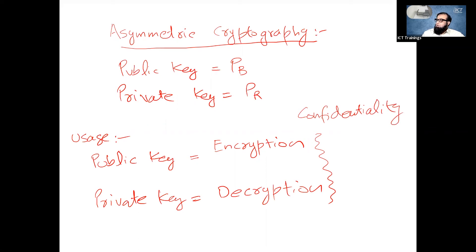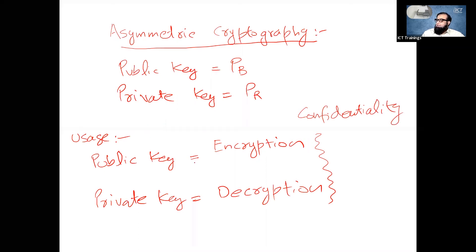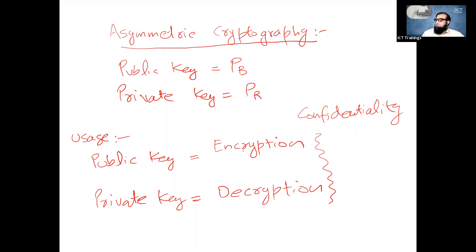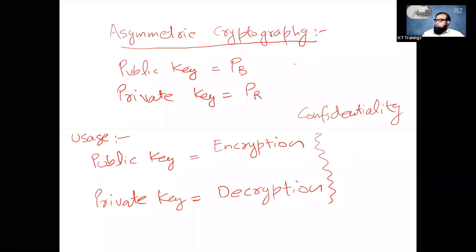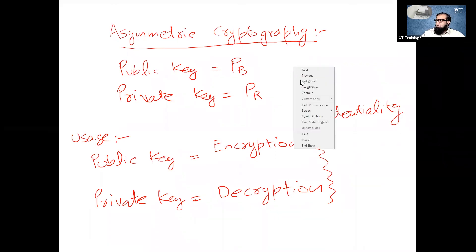Because jo bhi data public key se encrypt kiya jayega usko duniya mein sirf aur sirf wahi shakhs khol sakta hai jiske paas uski private key hai. Aur usually jo hum examples discuss karte hain aur usme do characters le aate hain Alice aur Bob.